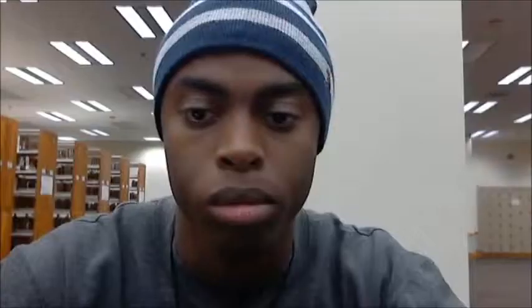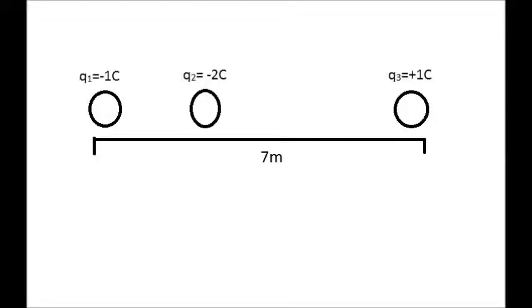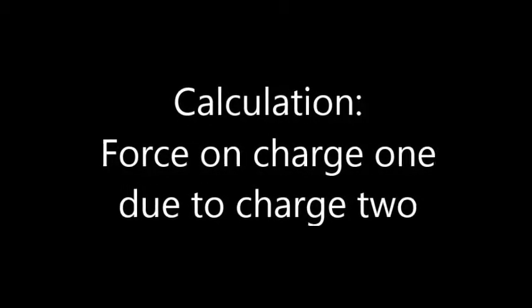In this example, the first charge is negative one Coulombs, the second charge is negative two Coulombs, and the third charge is positive one Coulombs. The force on charge one due to charge two is not affected by charge three. The force on charge one due to charge three is not affected by charge two. Because charge one and two are both negative, the force on charge one due to charge two is to the left, which signifies repulsion.